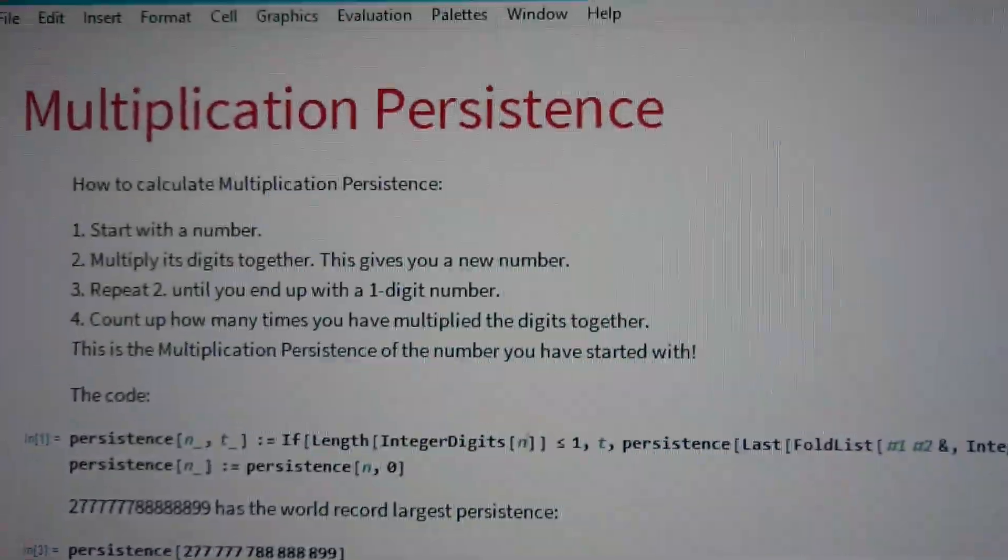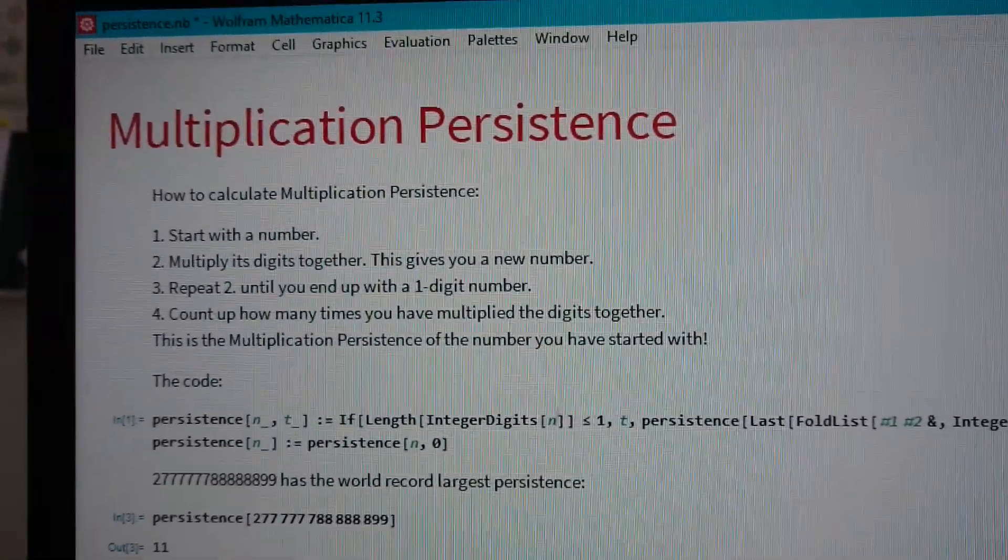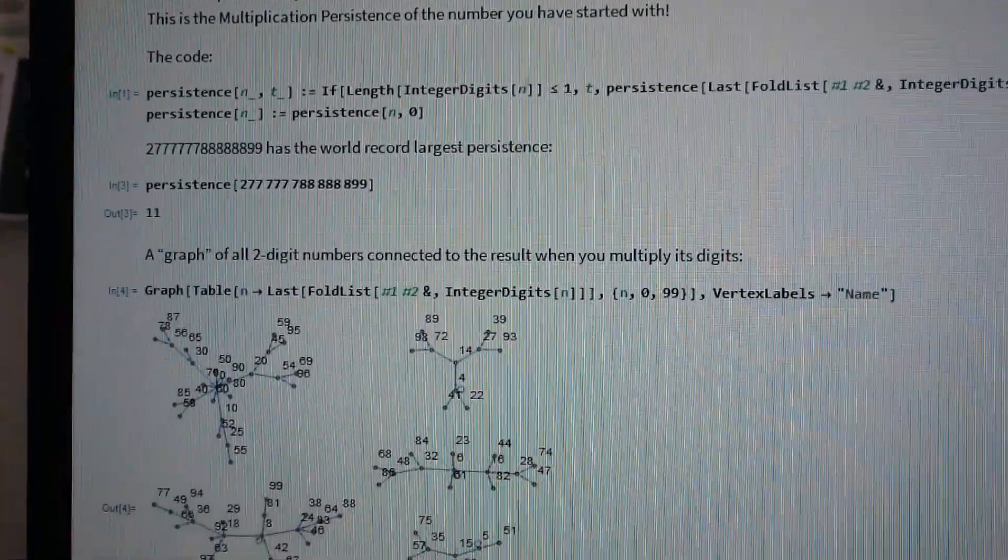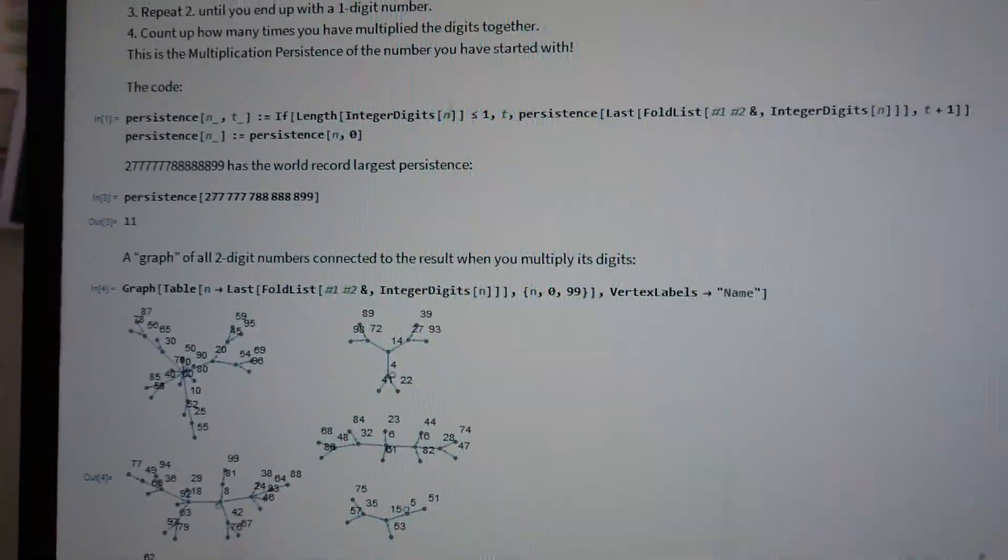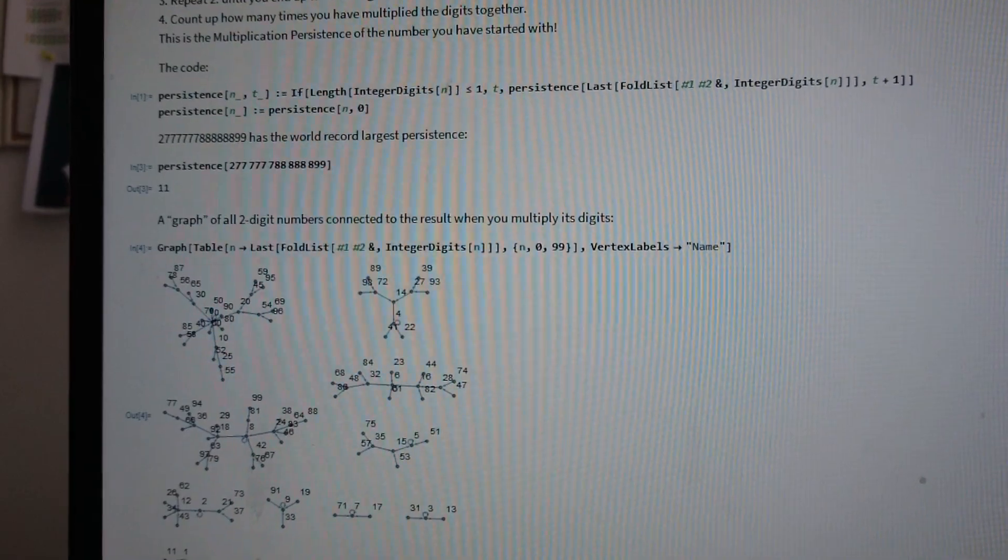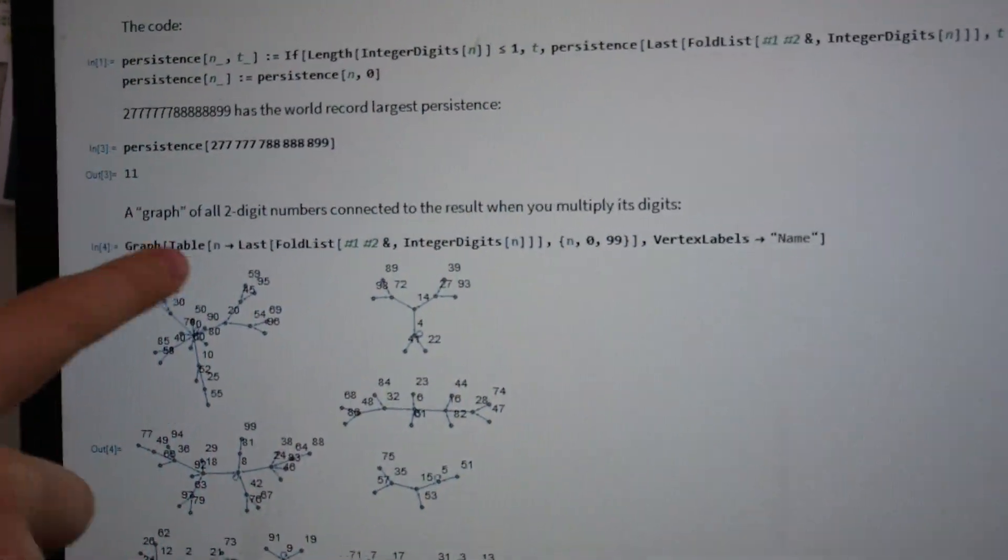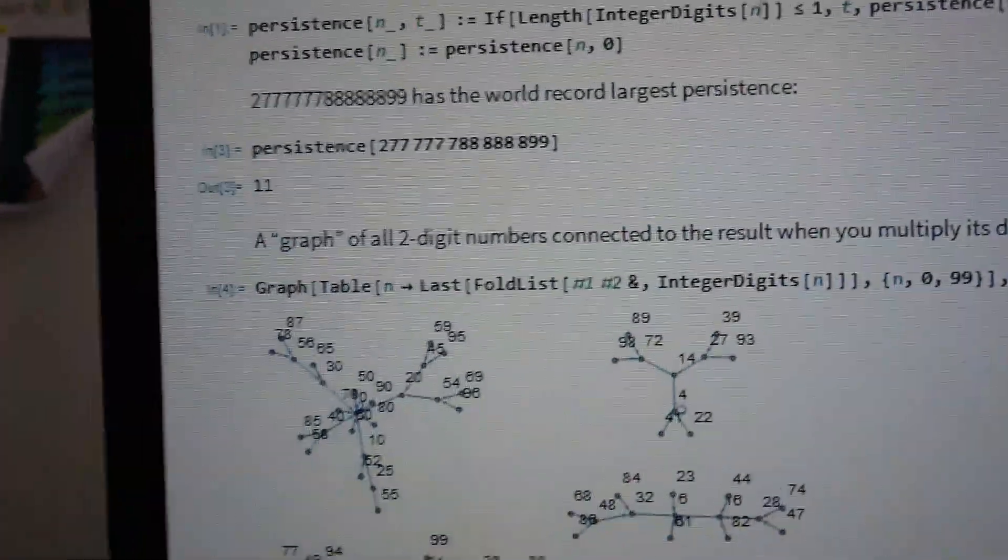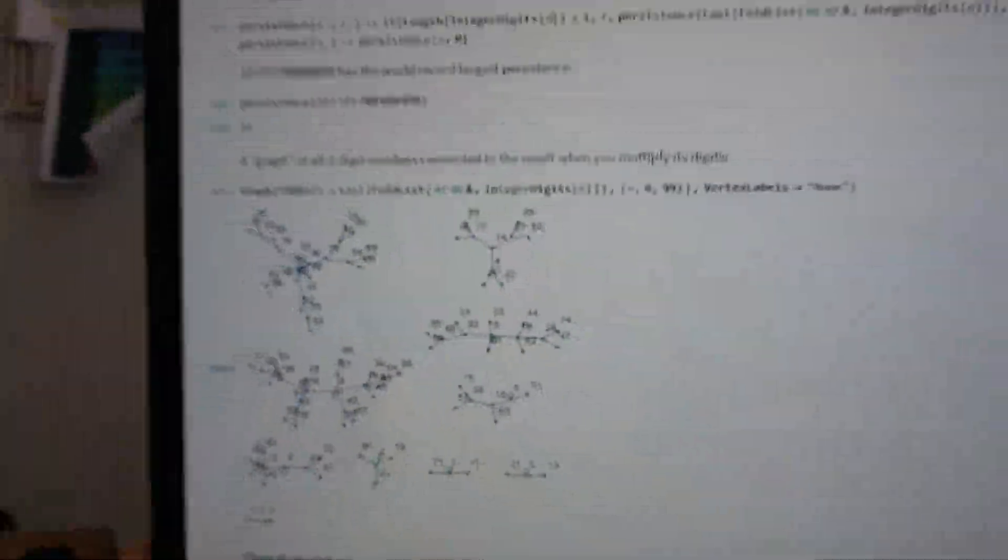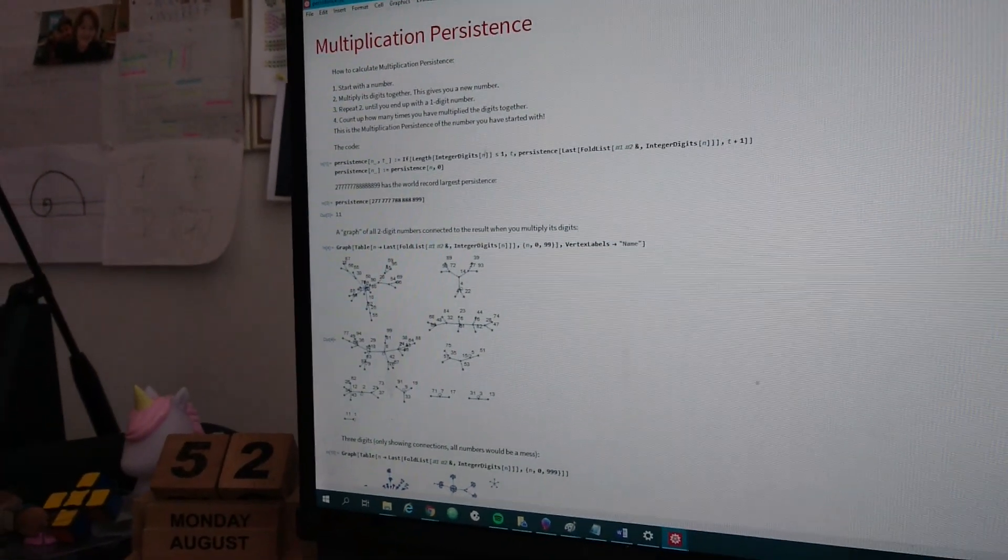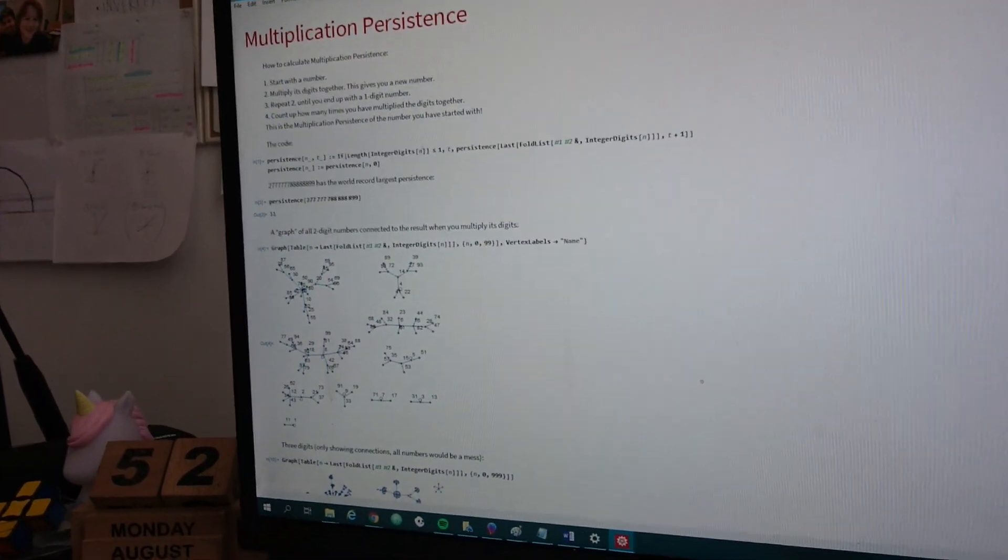This is, by the way, something that Simon has written all by himself in Wolfram Mathematica. So he made sort of like a digest for what we know so far about multiplication persistence. So this number is the record. And then I came up with this idea myself. Or maybe you should show a bigger image because this is really tiny.